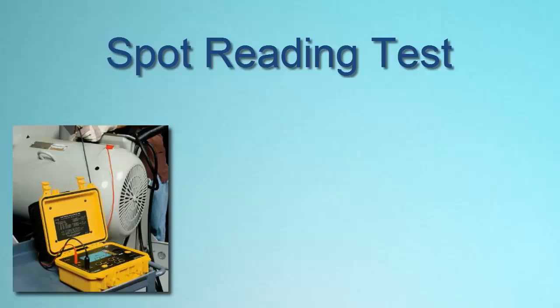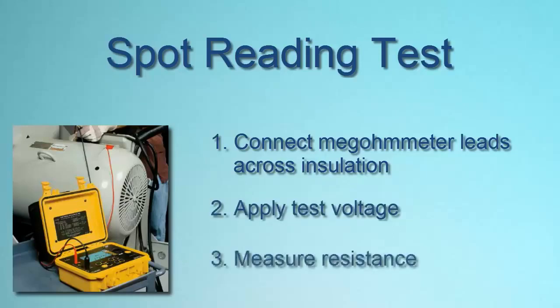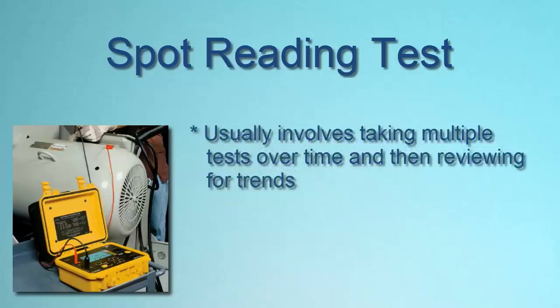The first type of insulation resistance test we'll look at is the spot reading test. This is relatively straightforward. Simply connect the megameter leads across the insulation to be tested, apply test voltage for a fixed period of time, typically 1 to 10 minutes, and then take a resistance reading. Spot testing is suitable for a system with small or negligible capacitive effect, for example a short wiring run. A single spot reading test is of limited value, but the results become meaningful when a series of tests, all featuring the same voltage and duration, are performed over time and the results compared.